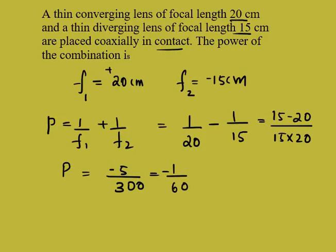And f you know that it is in cm, so when you convert it into meter will be minus 100 divided by 60 will come, which will give you minus 5 by 3, and the option is minus 5 by 3 diopters.